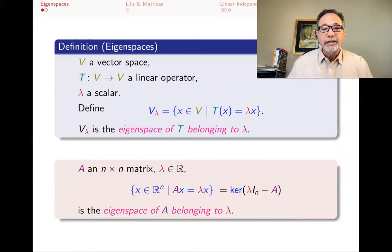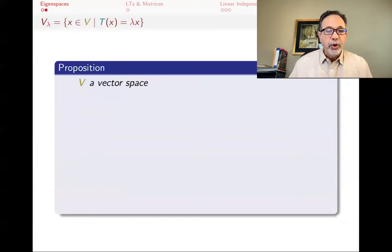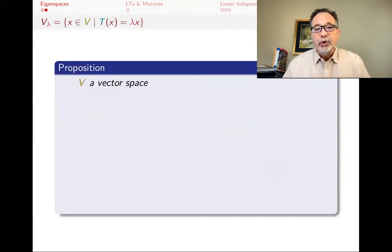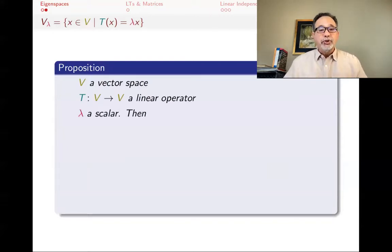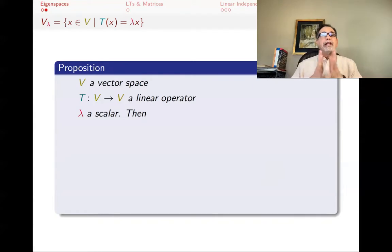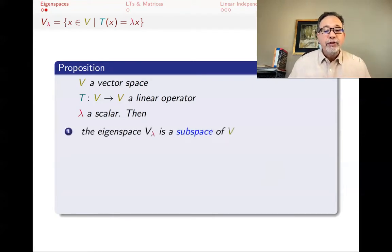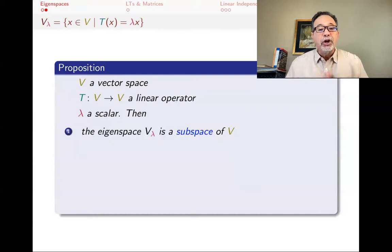These two definitions correspond: if you start with a linear operator T and find its matrix with respect to some basis, the eigenspaces will correspond. The reason we look at eigenspaces is the following proposition: given a vector space, a linear operator, and any scalar lambda, the eigenspace V sub lambda is a subspace. This is why we think of eigenspaces — we can use the machinery and vocabulary of vector spaces to talk about them, including discussing their dimension.